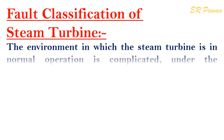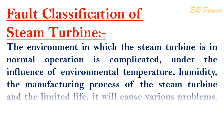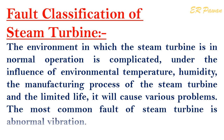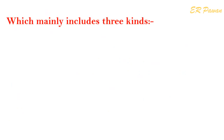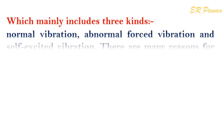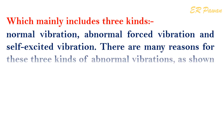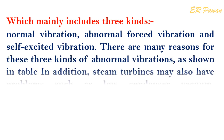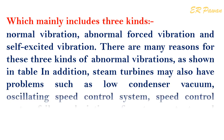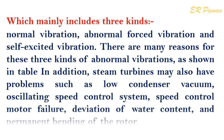Fault classification of steam turbine: The environment in which the steam turbine operates is complicated. Under the influence of environmental temperature, humidity, the manufacturing process, and limited service life, various problems will occur. The most common fault of the steam turbine is abnormal vibration, which mainly includes three kinds: normal vibration, abnormal forced vibration, and self-excited vibration. In addition, steam turbines may also have problems such as low condenser vacuum, oscillating speed control system, speed control motor failure, deviation of water content, and permanent bending of the rotor.